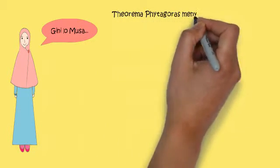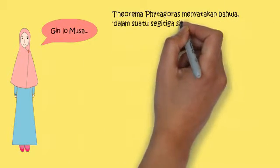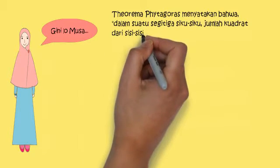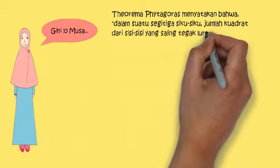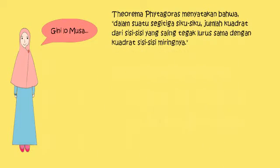Teorema Pitagoras menyatakan bahwa dalam suatu segitiga siku-siku, jumlah kuadrat dari sisi-sisi yang saling tegak lurus sama dengan kuadrat sisi miringnya. Perhatikan segitiga berwarna merah ini.